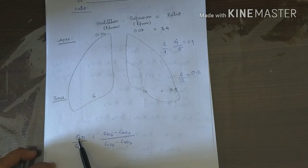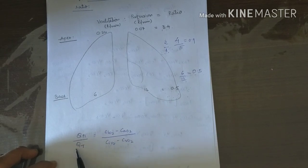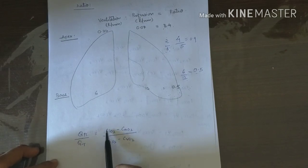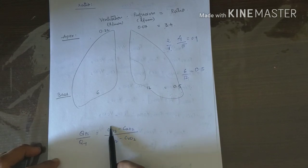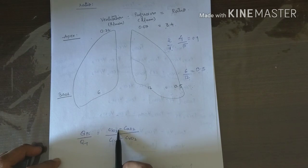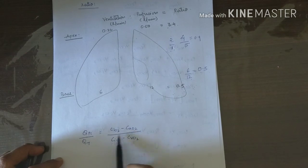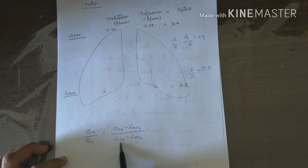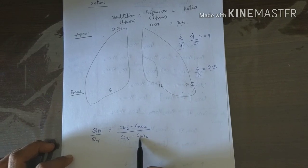Physiological shunt is calculated by the following equation: Qps (physiological shunt blood flow per minute) equals Qt (cardiac output per minute) multiplied by (CiO₂ — concentration of oxygen in arterial blood when V/Q ratio is ideal — minus concentration of oxygen in actual arterial blood) divided by concentration of oxygen in venous blood.